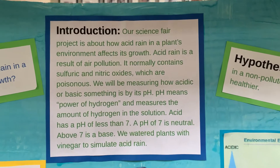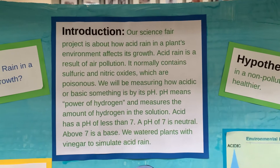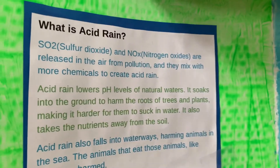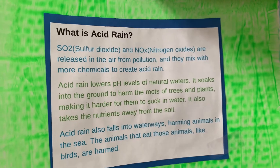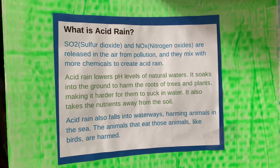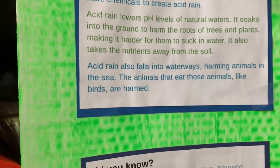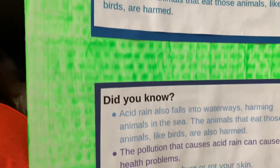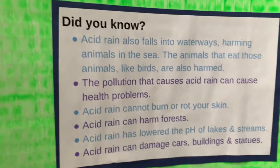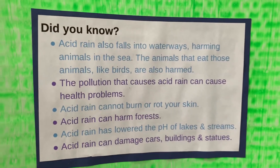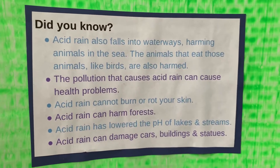Acid rain is caused when sulfur dioxide and nitrogen oxide are released into the air from factories. They mix with the clouds, and when they're blown around with the wind, they come down as acid precipitation.